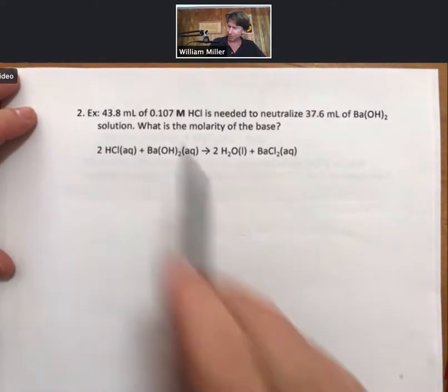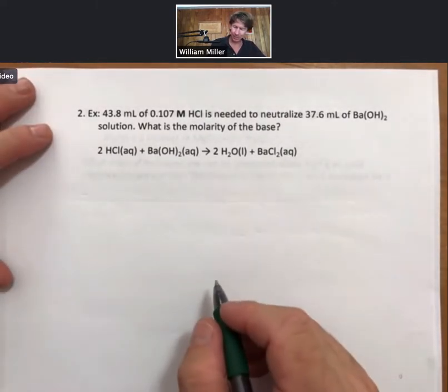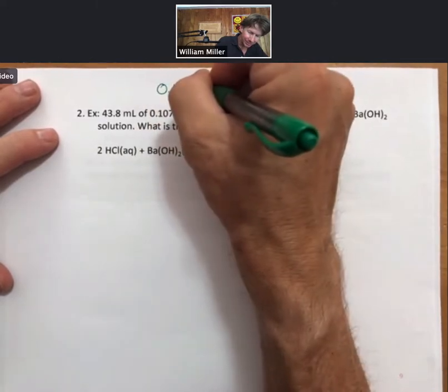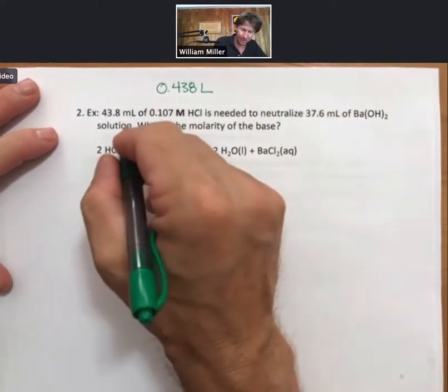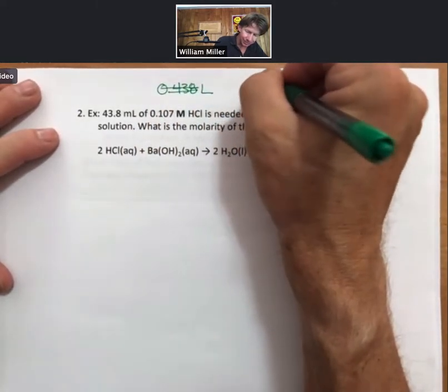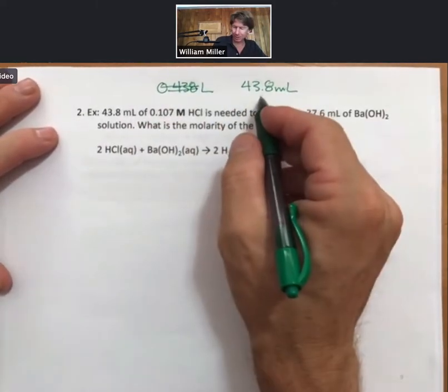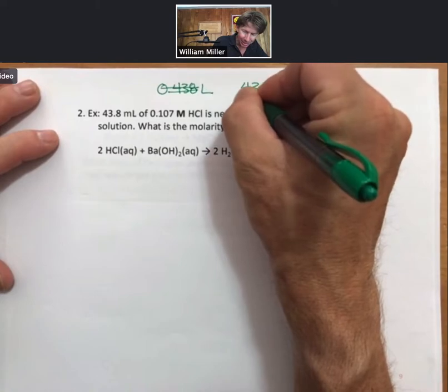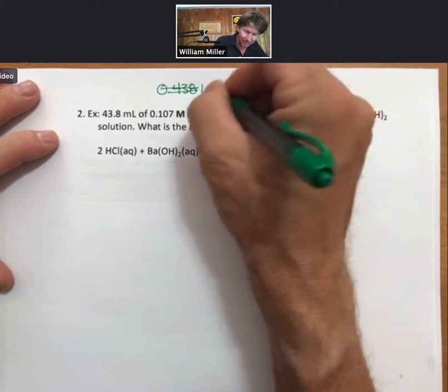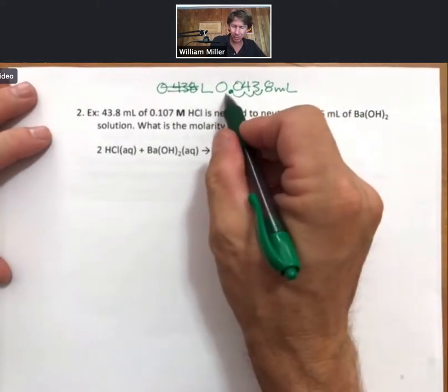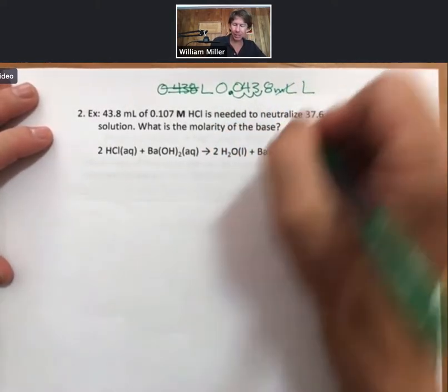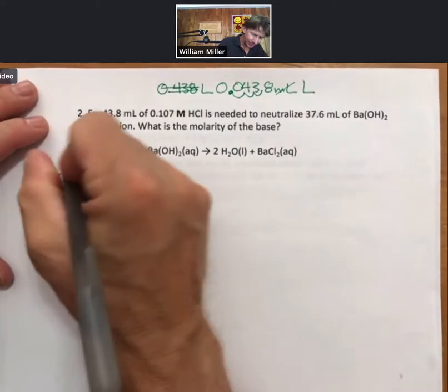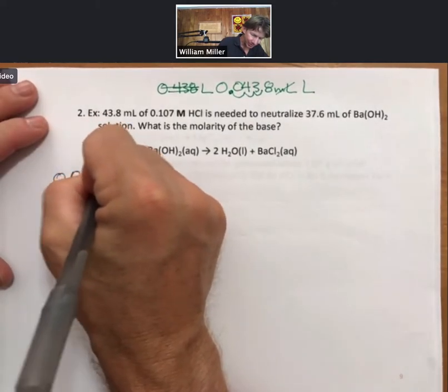I still have my volume, this time in milliliters instead of liters. So I'm going to go ahead and convert it. I know my milliliters. I know that to get to liters, there's one liter equals 1,000 milliliters. That's 10 to the 3. So I'm going to move my decimal point three places. That's better. 0.0438 liters.